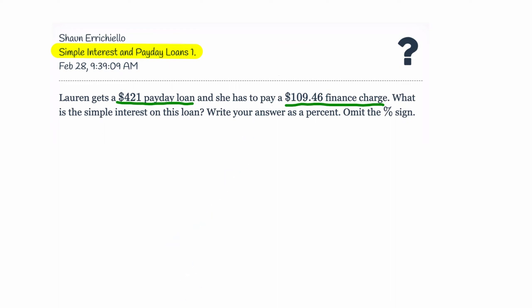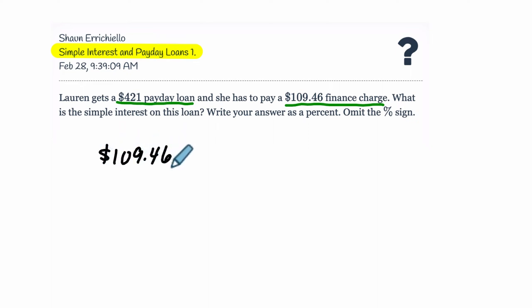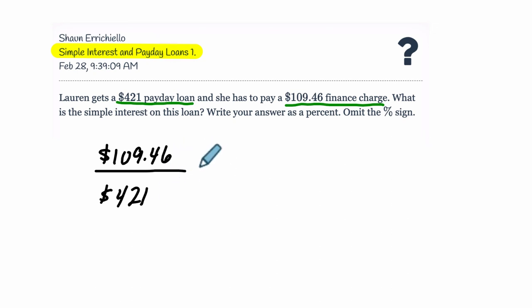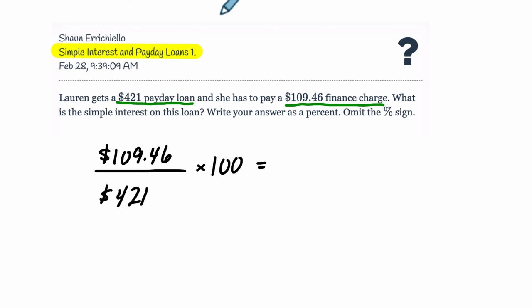In other words, we're asking what percent of the loan is the finance charge. So we take the $109.46, our finance charge, and divide it by the $421 payday loan. That's going to give us a decimal — our ratio — and we're going to multiply that by 100, which will effectively turn it into a percent. So let's do that.